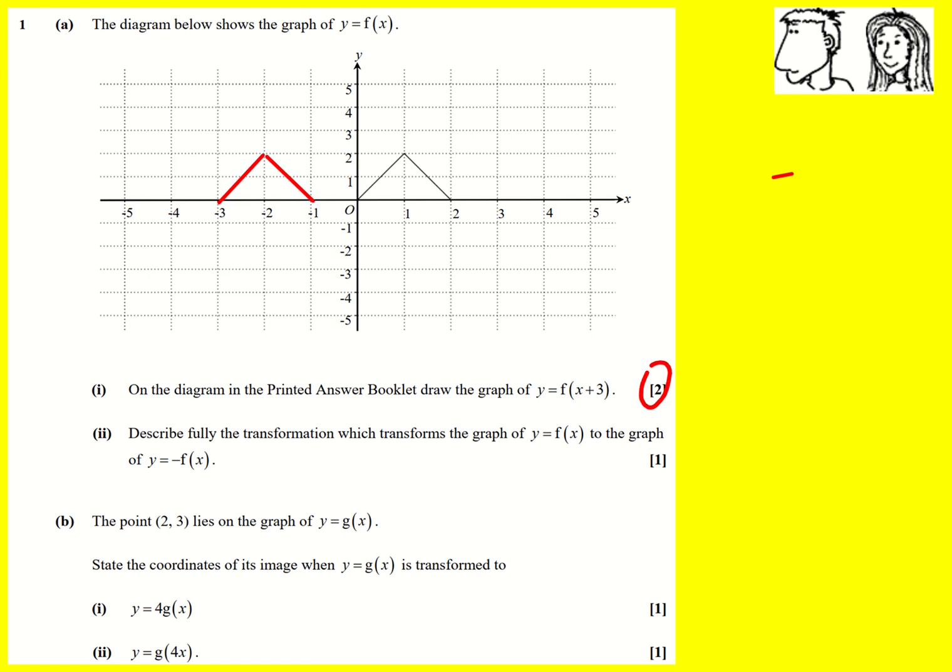Okay, describe fully the transformation which takes f(x) to minus f(x). That means that every f(x) value becomes negative. So for example, this one here would go down here, this one would actually stay where it was, we'd get this kind of shape. It's not actually asking us to draw the graph, but it's not a terrible idea. And what is this? It's a reflection in the x-axis.